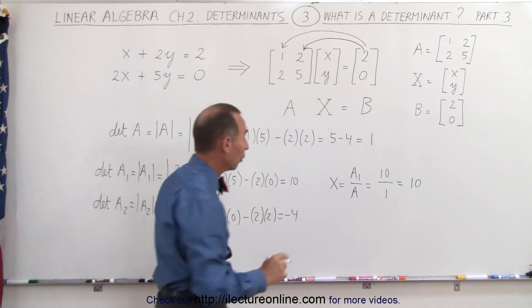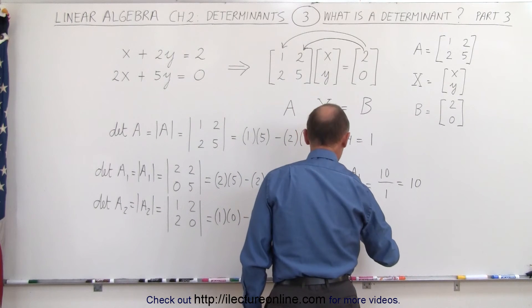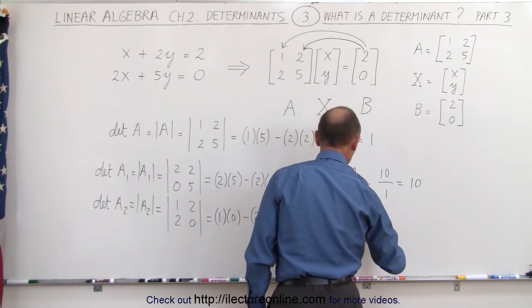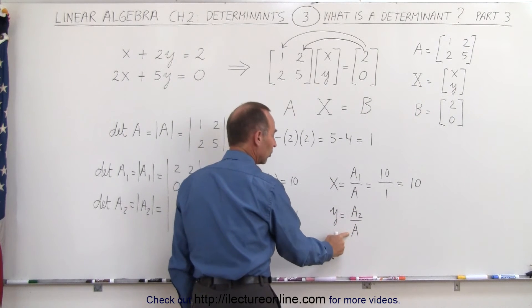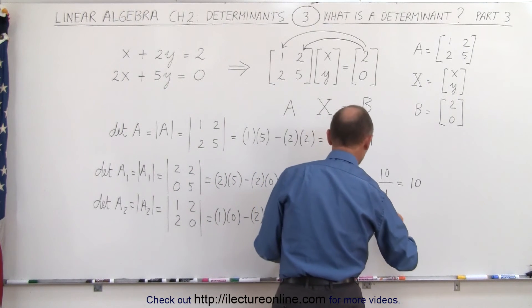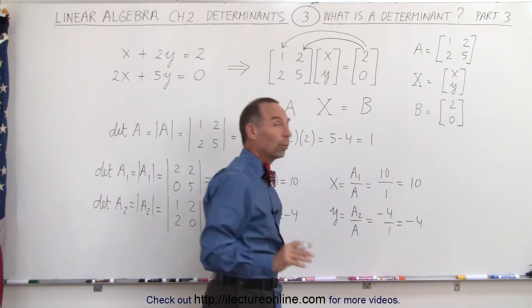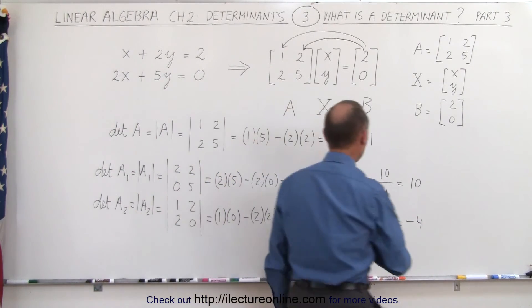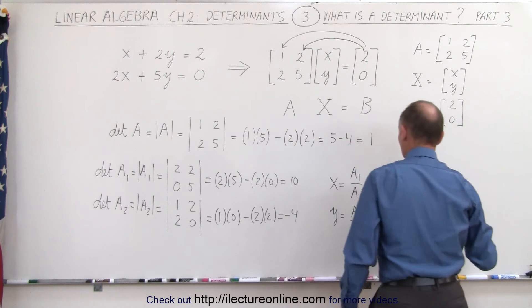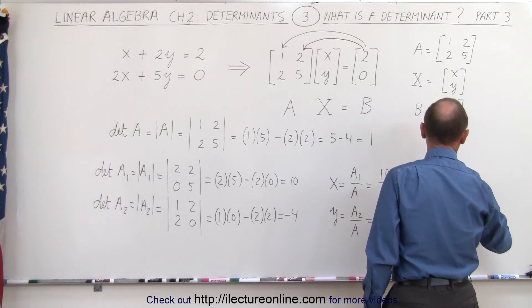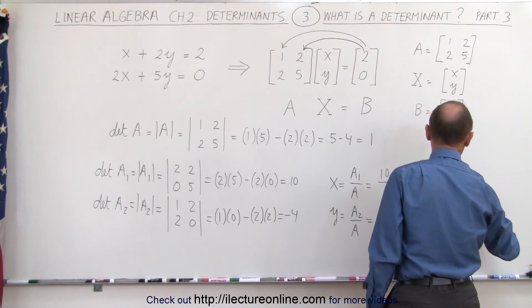We can now find y. y equals the determinant of A2 divided by the determinant of A, which is minus 4 over 1, or minus 4. The solution to this system of linear equations is x equals 10 and y equals negative 4.